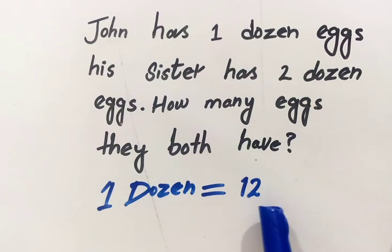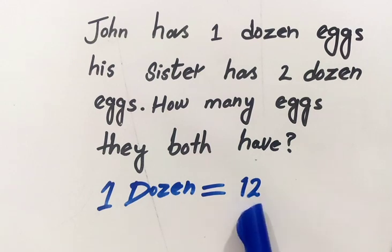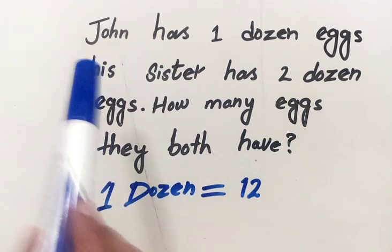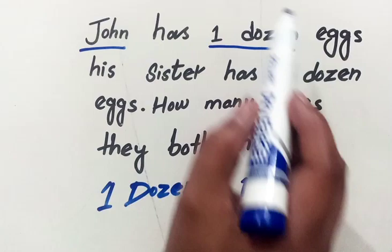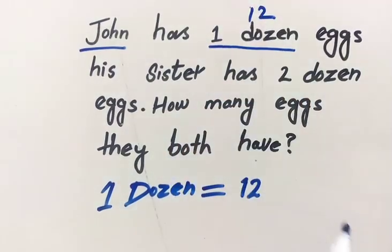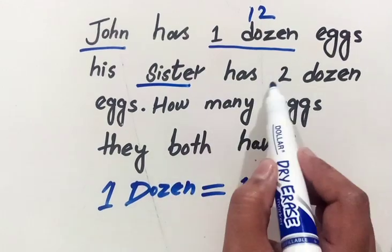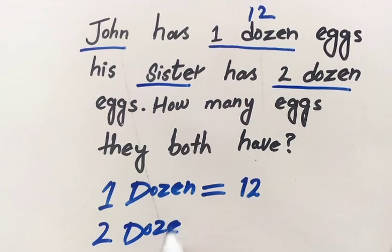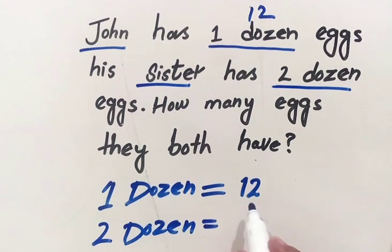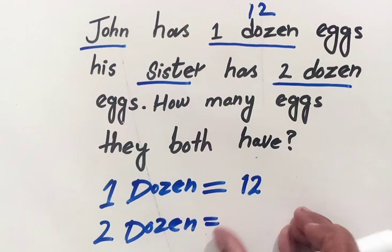John has one dozen eggs, it means he has 12 eggs. And his sister has two dozen eggs. Now, two dozen is equal to, to evaluate the answer for two dozen...